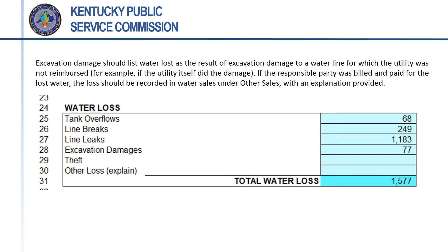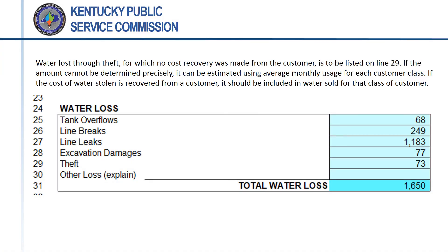Excavation damage losses should be listed on line 28 only if the utility was not reimbursed for the water that was lost. For example, if the utility itself broke a line during excavation, the water loss would not be reimbursed and the gallons lost should be listed on this line. If the responsible party reimbursed the utility for the value of the lost water, the quantity should be listed as other sales in the water sold section with an explanation provided. Keep in mind that paying to repair the damaged line is not the same as paying for the water that was lost — if the responsible party paid for repairs but not the water, the quantity lost should be entered on line 28.